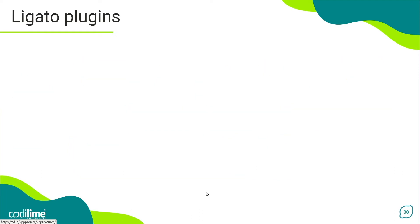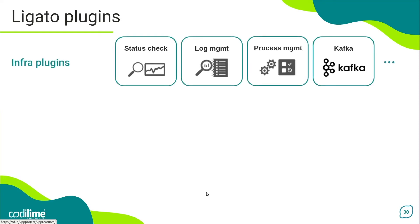As for the other plugins, they are as follows. There is a Status-Check plugin that collects and aggregates the status information of all other plugins — this information can then be reported to external clients. Another example is the Log Manager, which allows you to configure log levels for individual plugins. Different log level choices such as debug, info, error, and the like are available.